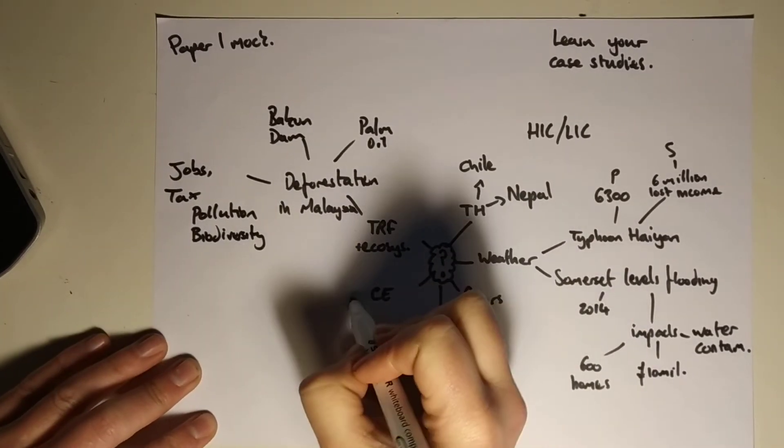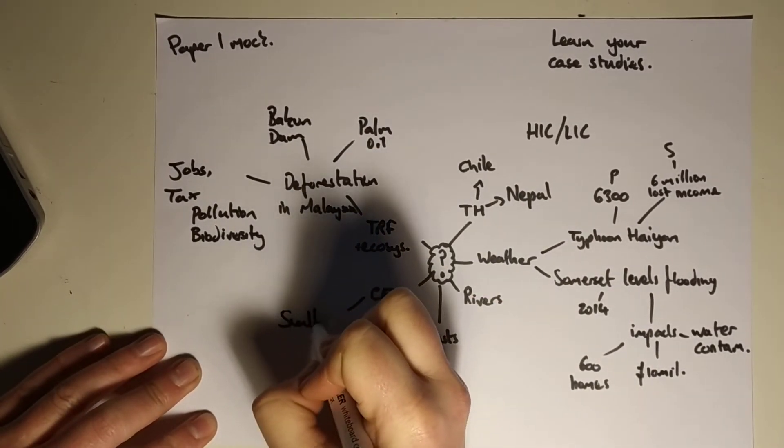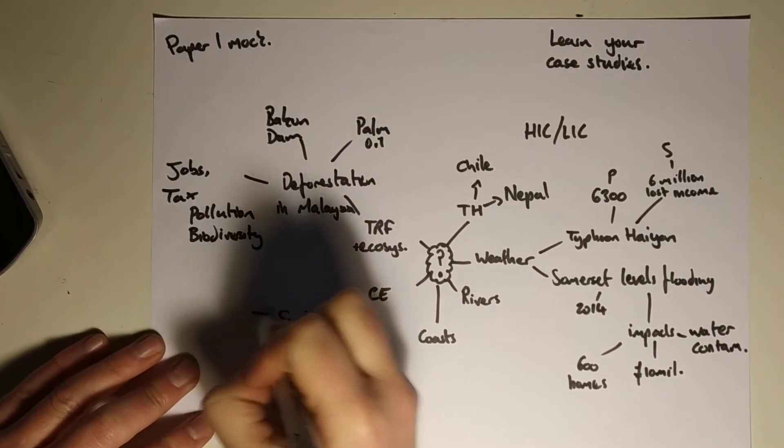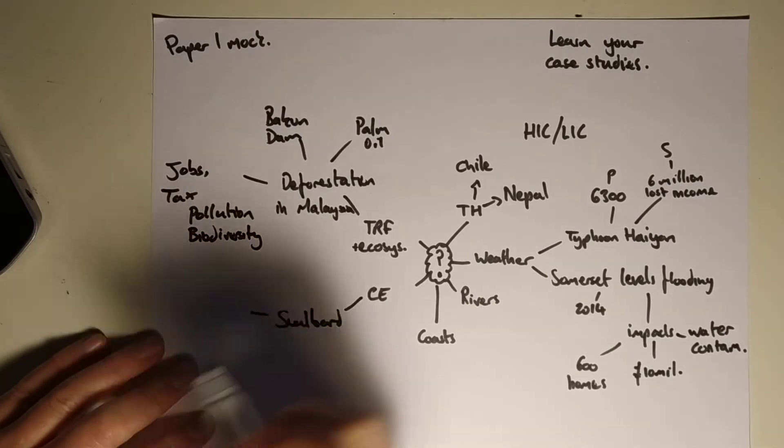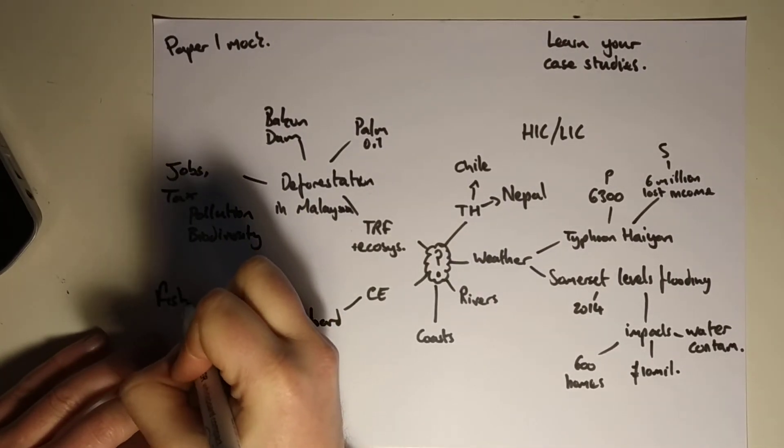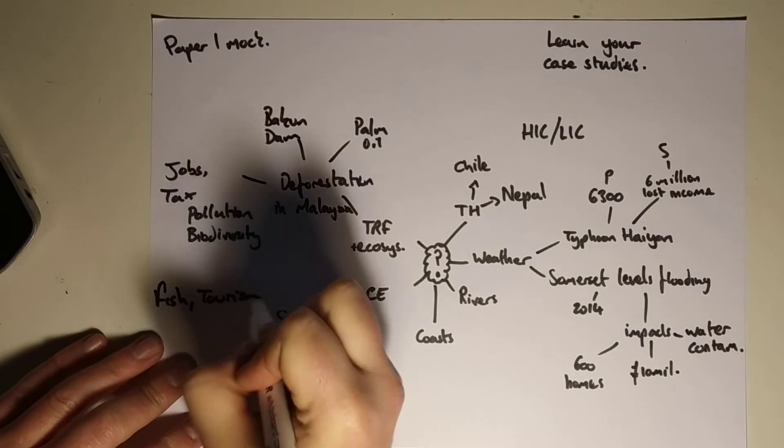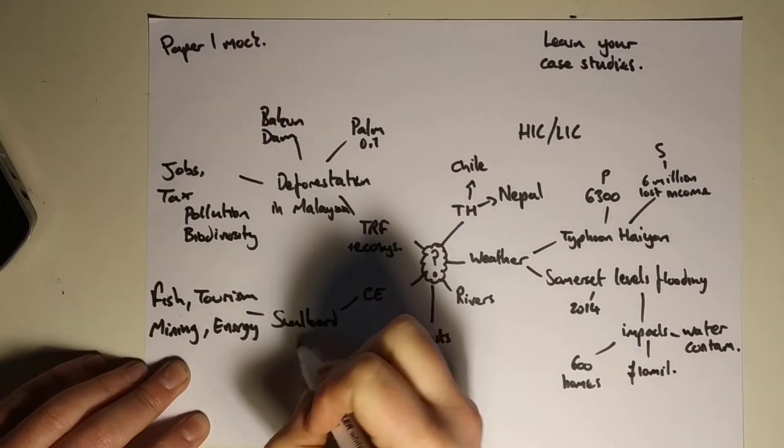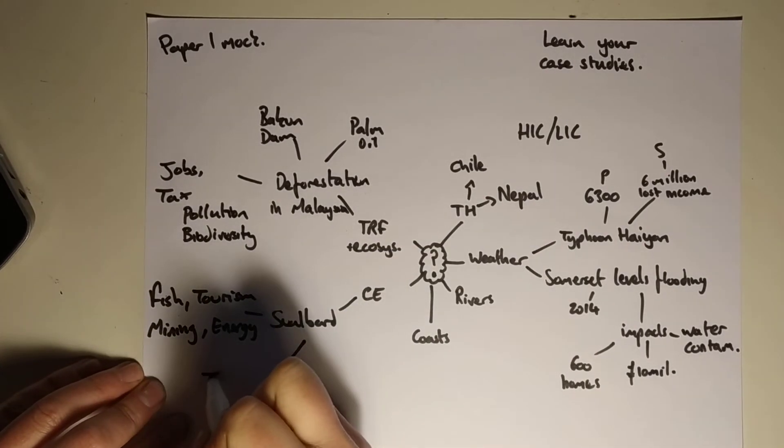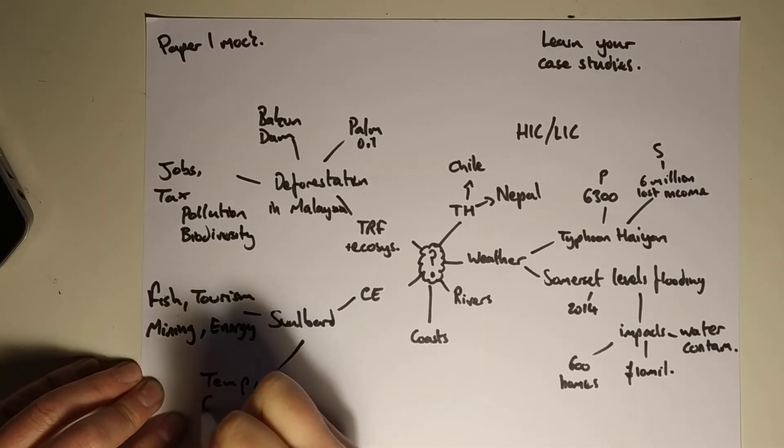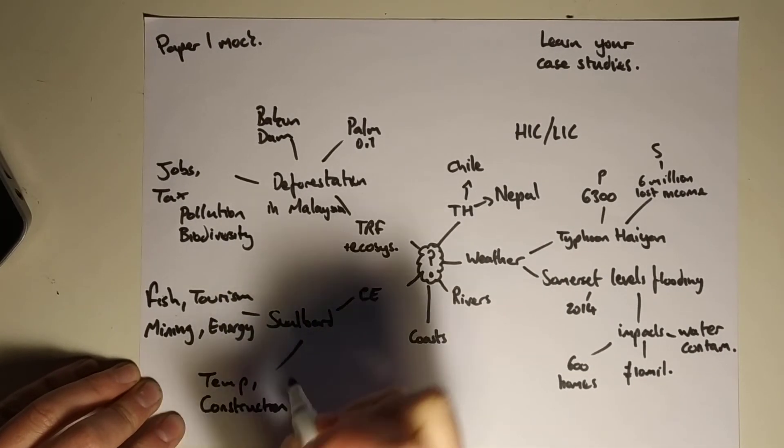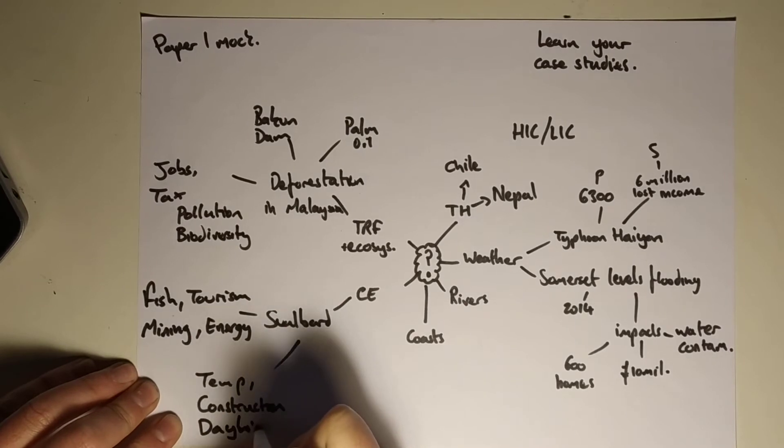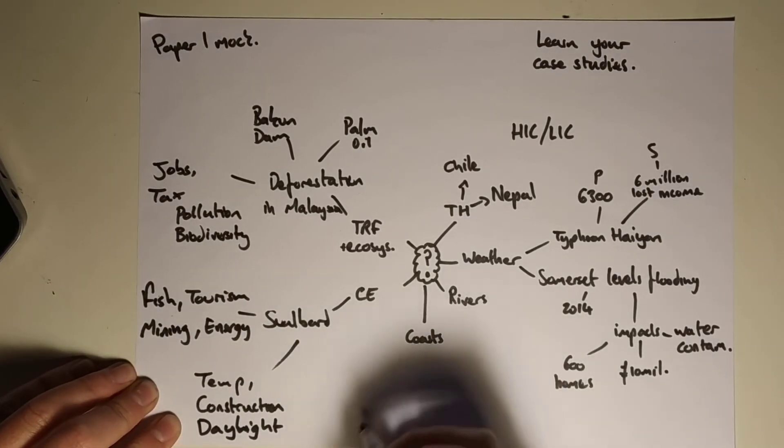Final one that you need to think about: Cold environments, Svalbard. This is our key cold environment. And we know lots of things about Svalbard. We drew a little polar bear in class as well. But the main thing you need to remember are some of the positives or the opportunities that exist in Svalbard. Things like fish, tourism, mining, and energy. And some of the challenges. Well, there's multiple challenges, but temperature, construction very difficult to do in Svalbard, so building some of our infrastructure. And also daylight, very minimal amounts of daylight during important months of the year.